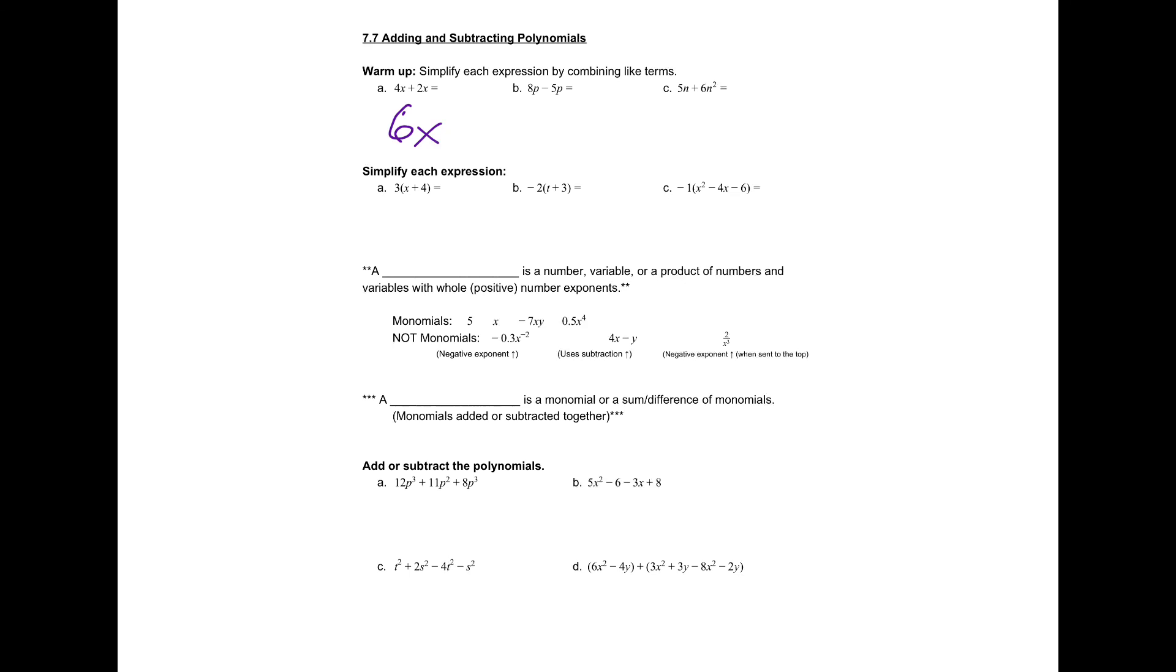So we can just add 4x plus 2x. Since the x is the same letter, we can just add them. Same thing is true for b. 8p minus 5p, 3p.